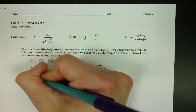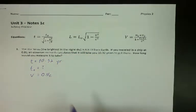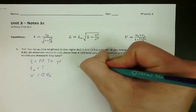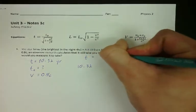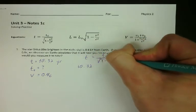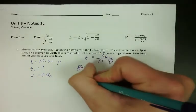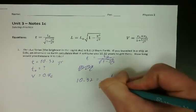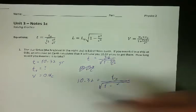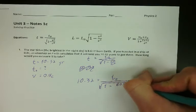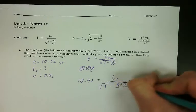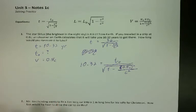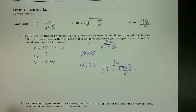The speed the person is traveling, V, is 0.8C. We set up the time dilation equation: T equals T-not over the square root of 1 minus V-squared over C-squared. So 10.32 equals T-not over the square root of 1 minus (0.8C)² over C². Notice that 0.8C in its entirety goes in for V, because the velocity is not 0.8 — it's 0.8C. You have to include that.